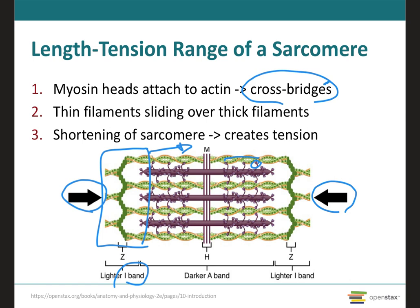Sarcomere shortening creates the tension of muscle contraction. Cross bridges can only form where the thin and thick filaments already overlap; if they don't overlap, there is no way for the myosin head to attach to the actin filament. Therefore the length of the sarcomere has a direct influence on the force generated when the sarcomere shortens — this is what we call the length-tension relationship.